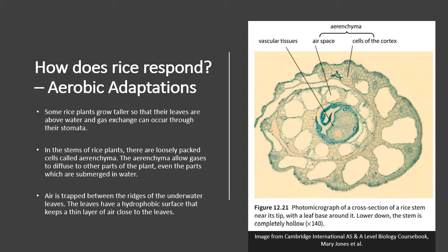In the stems of rice plants — and you'll see I've taken an image from the textbook — we have structures called aerenchyma. Aerenchyma are basically loosely packed cells that allow the diffusion of gases from the stems of the plants to other parts of the plant, including even the submerged parts. The plant has grown taller, its leaves are exposed to the air, it gets the gases it needs, and then the aerenchyma cells allow gases to move within the plant down to the submerged parts, so those parts don't have to be open to the air.